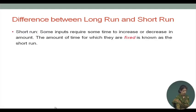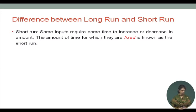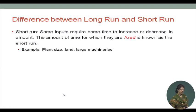Let me explain the difference between long run and short run. The short run is the period during which some inputs require time to increase or decrease — the amount of time for which they are fixed is known as the short run. For example, plant size, land, and large machineries are fixed inputs in the short run.